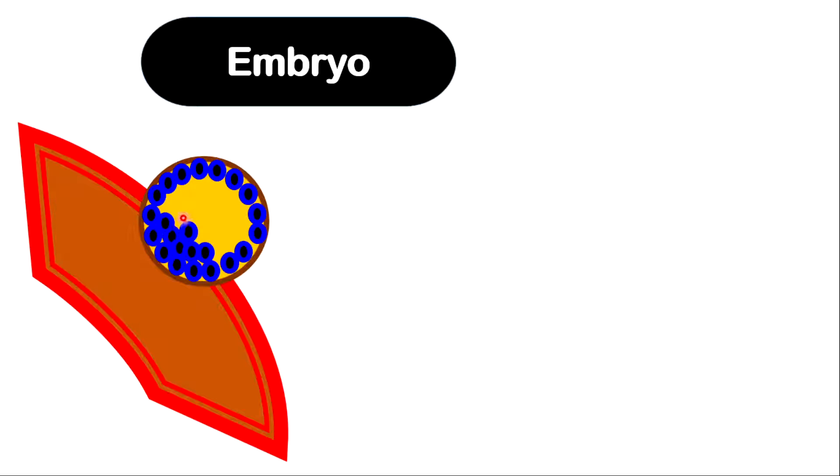The zygote will move towards the uterus. While moving, the zygote will undergo cell division by mitosis to form an embryo. As the zygote moves down, it will attach to the wall of the uterus, particularly the endometrium. Let's zoom in to see what exactly is happening here. The embryo that was formed — notice there are many cells — is now implanted within the endometrium of the uterus.